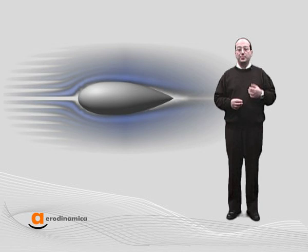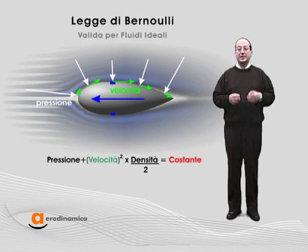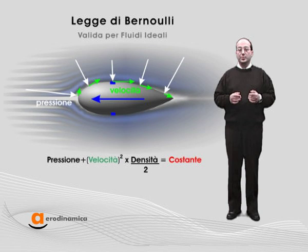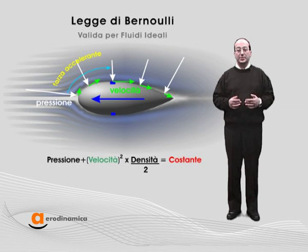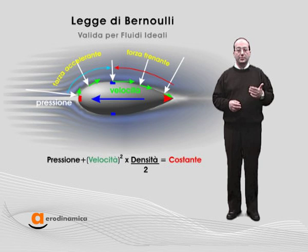In order to understand the genesis of the drag due to pressure in the case of a viscous fluid, we have to consider the ratio between the speed of the fluid and the pressure. For an ideal fluid, the pressure is directly related to the speed of the fluid according to Bernoulli's law. As the speed of the fluid increases, the pressure decreases, and vice versa, as you can see on the figure. Therefore, a decreasing pressure creates an accelerating force on the fluid particle, while an increasing pressure creates a braking force. For an ideal fluid, there will be two stop points at the leading and at the trailing edge of the aerodynamic body, and this phenomenon produces no drag.